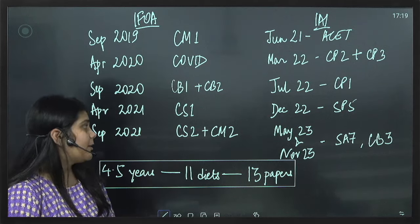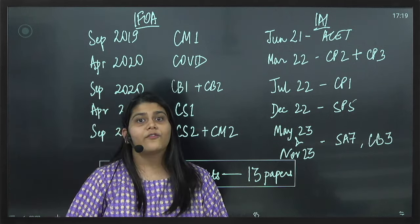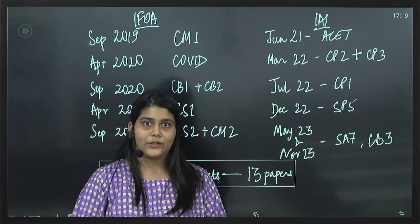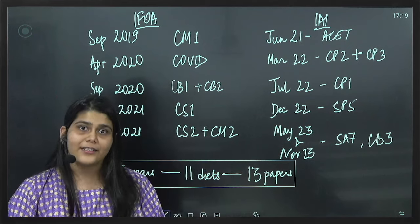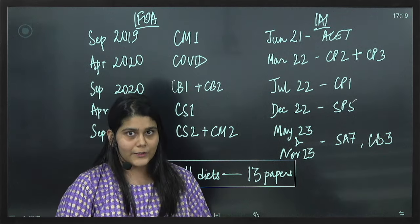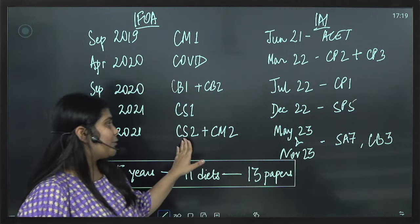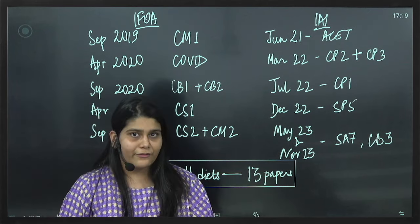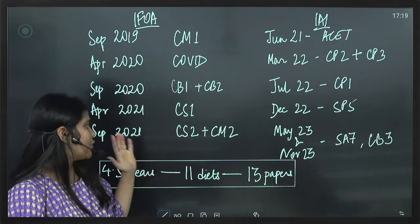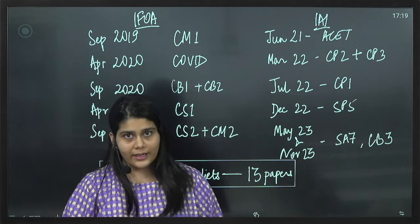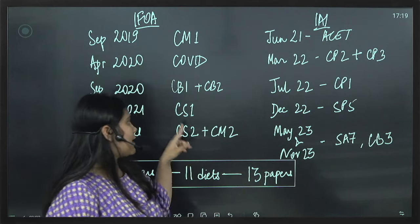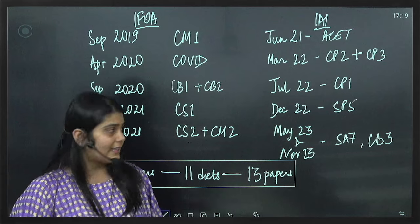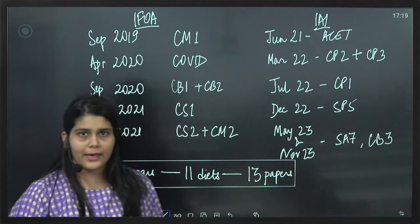In September 2021, because of the push I got from the institute, which is Actuators Educational Institute, and Praveen Sir himself, I decided to appear for two of the apparently toughest papers in the course, which is CS2 and CM2 together in the same diet. CS2 was somewhat of a build up of CS1 and CM2 somewhat of a build up of CM1.